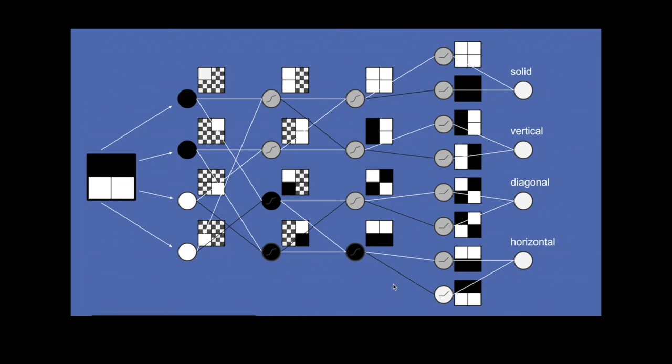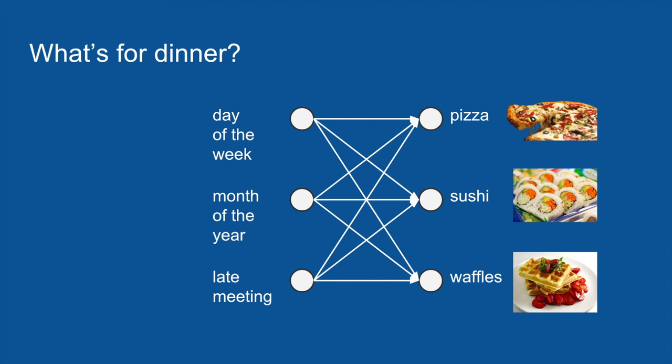Now if you are new to neural networks, I highly recommend you watch the How Neural Networks Work tutorial — there's a link down in the comments section. If you would rather not do that right now and are still not familiar with neural networks, you can think of them as a voting process. In the neural network you set up, there is a complicated voting process where all of the inputs like day of the week and month of the year go into it; then you train it on your history of dinners and learn how to predict what is going to be for dinner tonight.